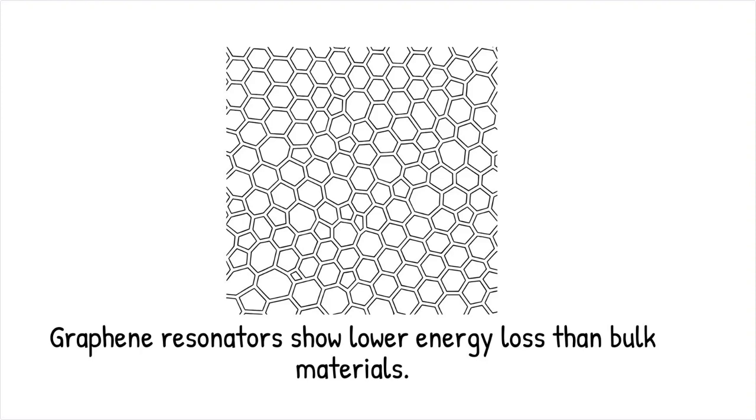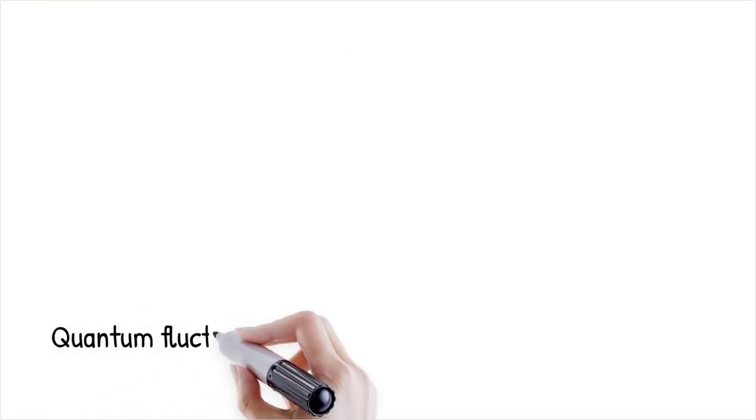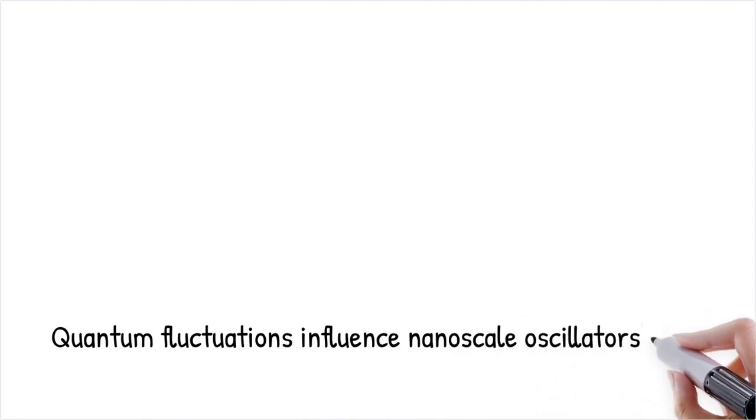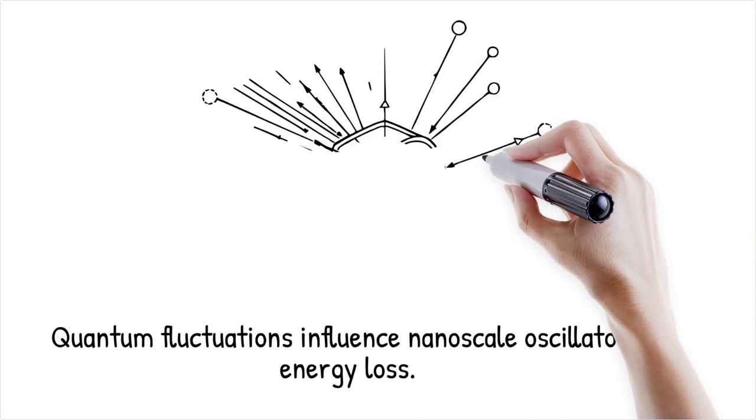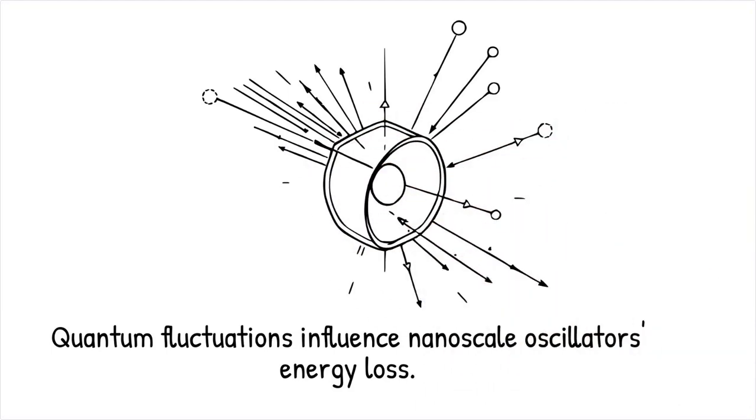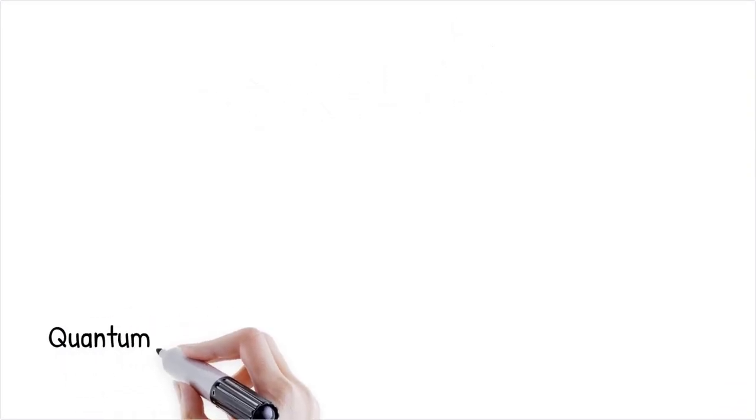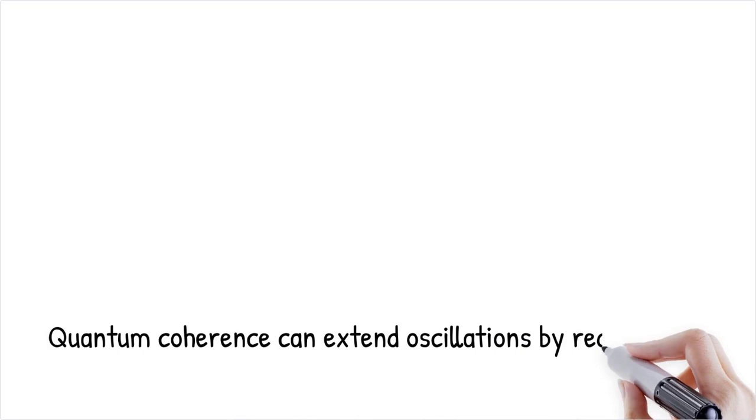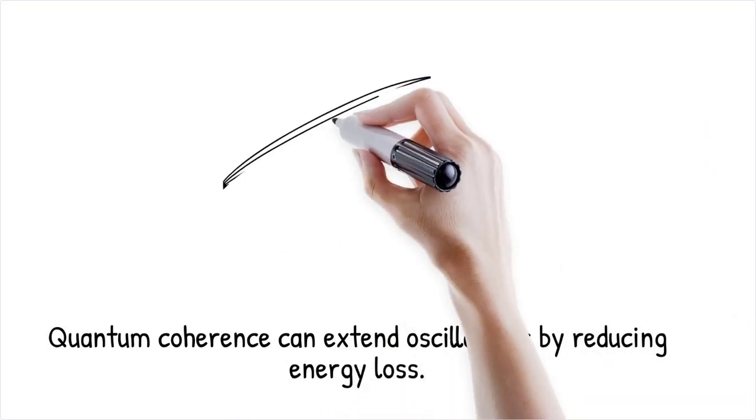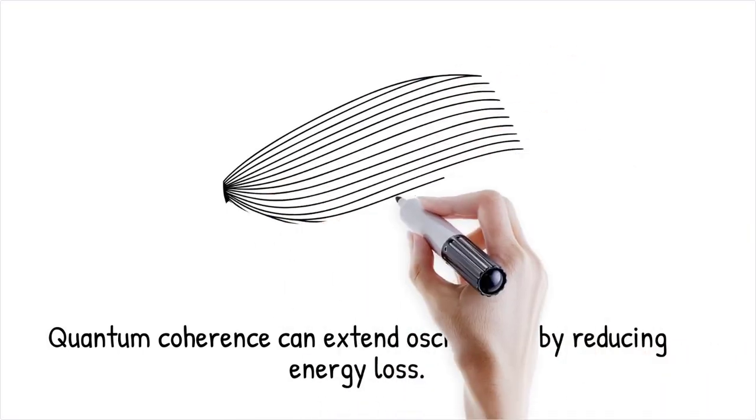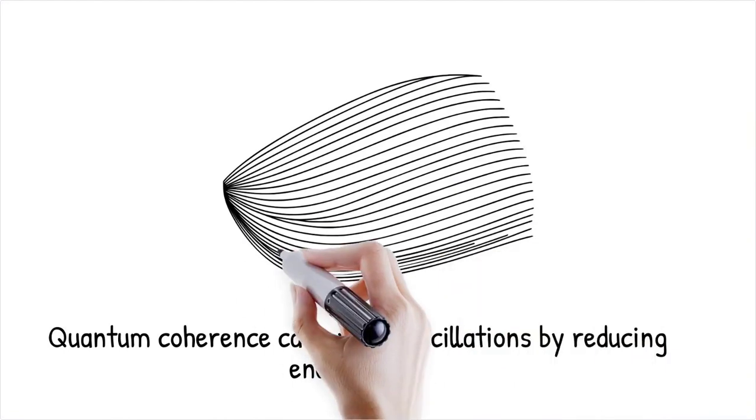At the nanoscale, quantum fluctuations and zero-point energy influence mechanical motion, affecting how oscillators lose energy. Unlike macroscopic systems, nanomechanical oscillators interact with the quantum vacuum, shifting damping behavior in unexpected ways. In some cases, quantum coherence sustains oscillations longer than anticipated by suppressing decoherence-induced energy loss.